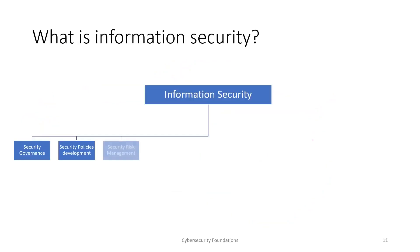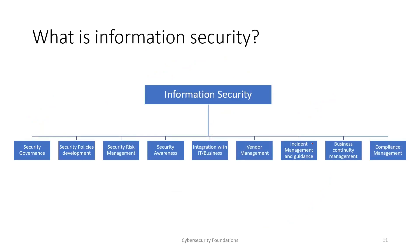When we talk about the objectives of information security, we find many aspects. Information security is responsible for creating security policies, conducting security risk management, providing security awareness to staff and new hires, integrating with the business to ensure new projects have security requirements in place, and handling vendor management, incident management and guidance, and business continuity planning.